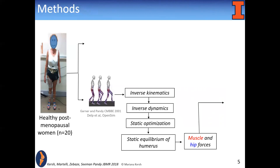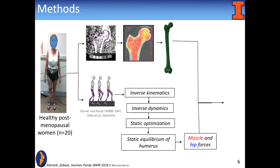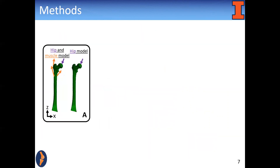We addressed these questions using a subset of data from a previously published study. The study gathered kinematic and ground reaction force data of 20 postmenopausal women walking at a normal speed. Muscle and hip forces were calculated from this data, and combining them with CT scans of the femur, we developed two FE models: one only including the hip joint force, and the other including both the hip joint and muscle forces.